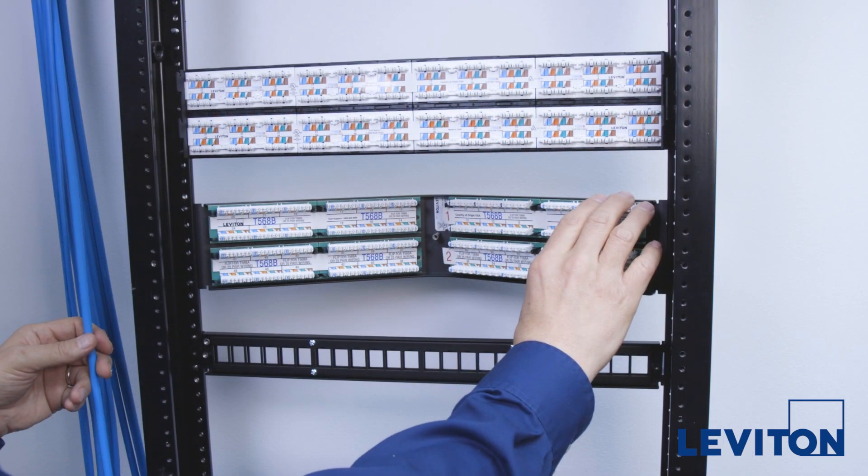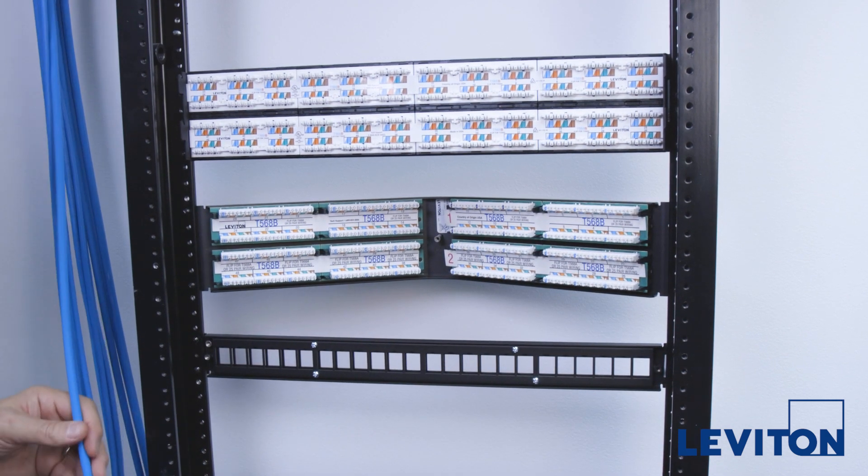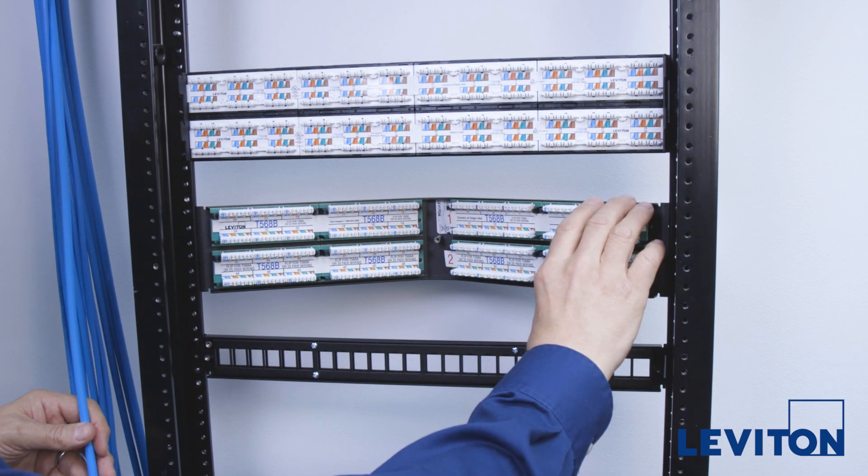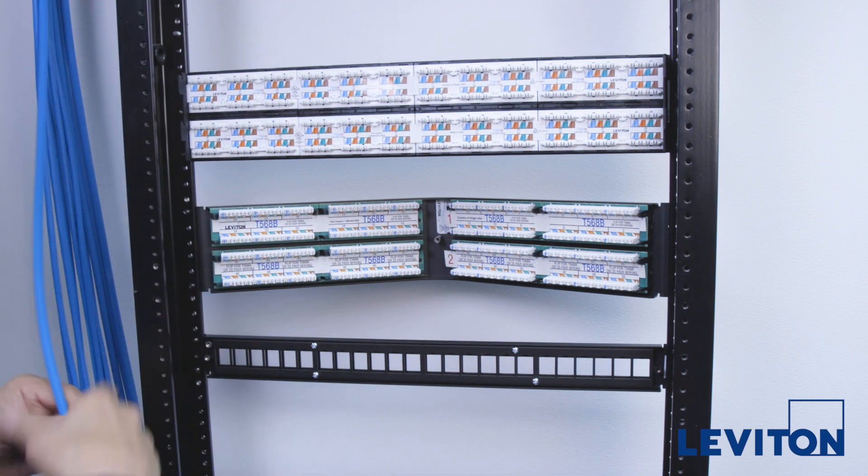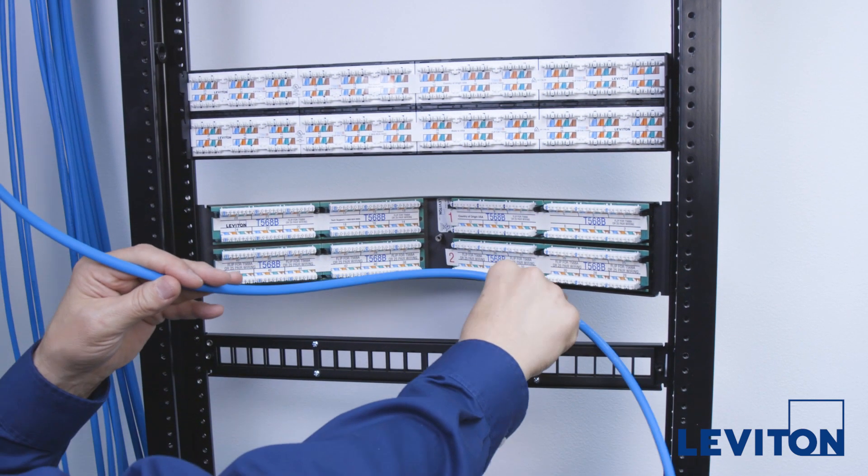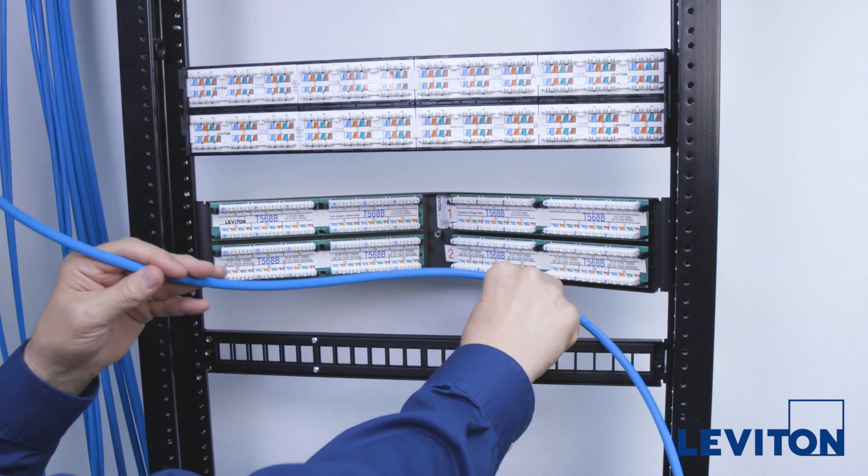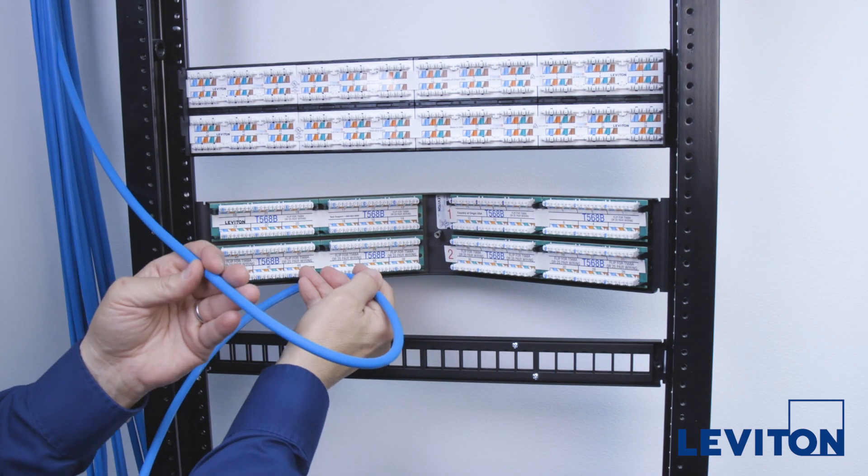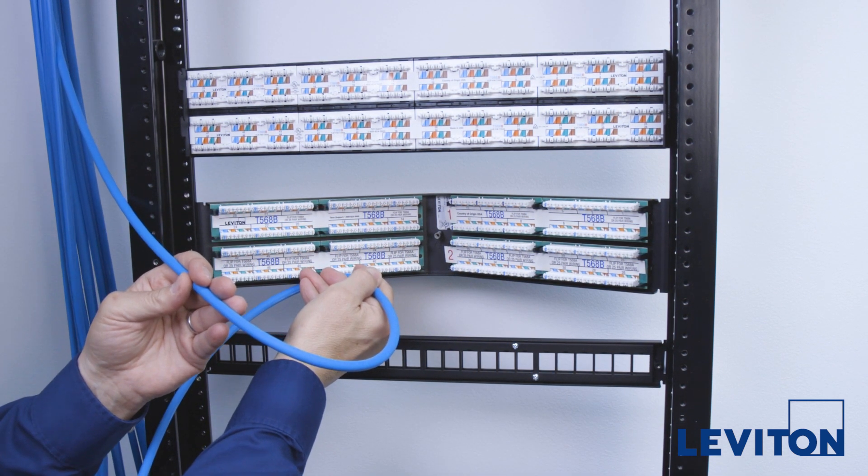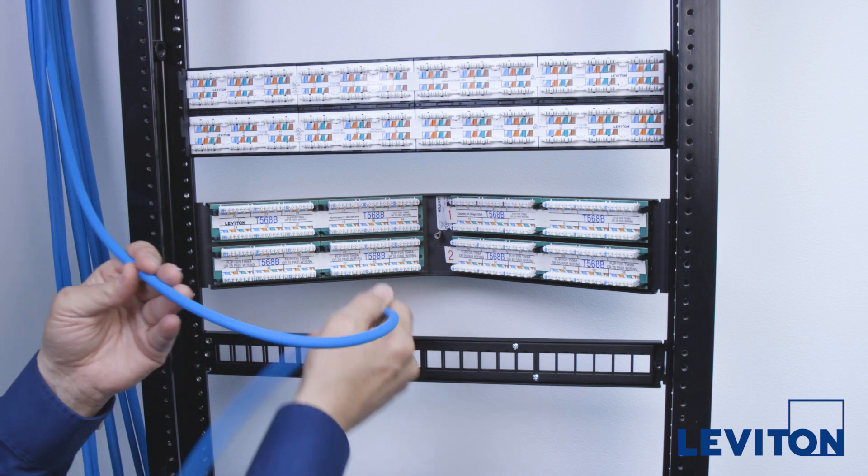With the angled patch panel, it's the opposite. When terminating wires on the right side of the panel, use the cable running down the left side of the rack. This avoids having to bend the cables nearly 180 degrees to reach the IDCs. The same principle would apply to terminating an angled quick port patch panel.